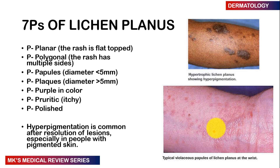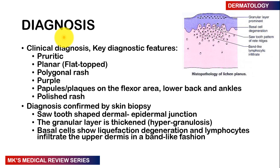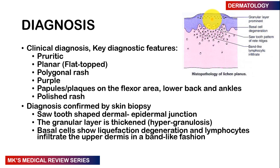Here you can see typical violaceous papules visible in individuals with lichen planus affecting the wrist. When it comes to diagnosis, the key diagnostic features include the seven Ps, but the diagnosis is confirmed by a skin biopsy. On biopsy, you expect to see a saw-toothed appearance at the dermal-epidermal junction, a prominent granular layer (hypergranulosis) where the stratum granulosum thickens, and liquefaction degeneration of the basal cells with lymphocytes infiltrating in a band-like fashion.